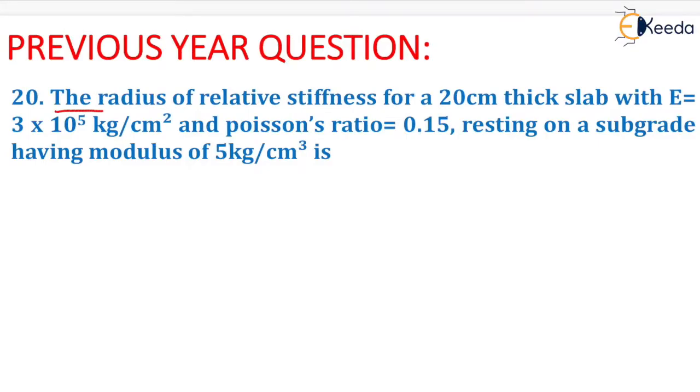The question is: The radius of relative stiffness for a 20 cm thick slab with E = 3 × 10^5 kg/cm² and Poisson's ratio = 0.15, resting on a subgrade having modulus of 5 kg/cm³ is.